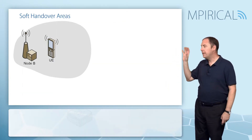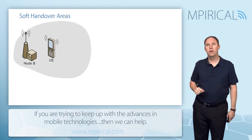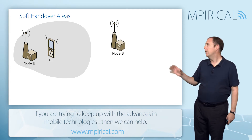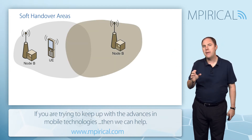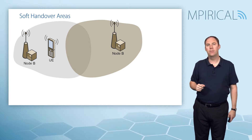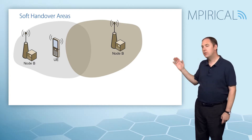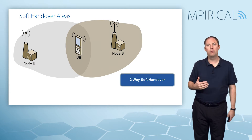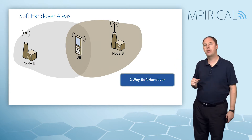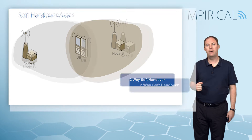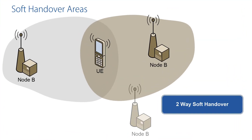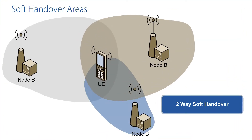We've got a mobile currently being served by a certain cell. The idea of soft handover is that we're going to be going into an area covered by another cell while the mobile is in a connected state. As the mobile moves, it's a make-before-break — we make a connection with the other Node B, so we're in a two-way soft handover. It's possible there may be an area covered by three or more Node Bs, giving us a three-, four-, or five-way soft handover.